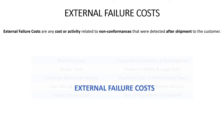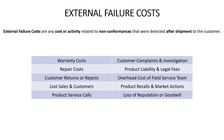External failure costs are the most devastating. These are any costs related to a non-conformance detected after shipment to the customer, and this is absolutely the most expensive cost of quality category. These failures occurred because prevention and appraisal activities didn't catch the non-conformance before shipment, resulting in additional costs and customer dissatisfaction. They include warranty costs, repair costs, customer complaints, product liability and legal fees, the overhead cost of a field service team, recalls and market actions, lost sales and lost customers, and lost reputation and goodwill. All of these failure costs are a penalty for poor quality that could be avoided through prevention and appraisal.